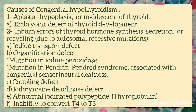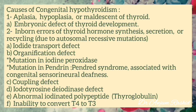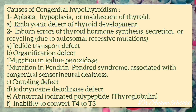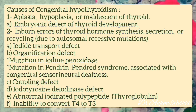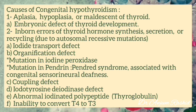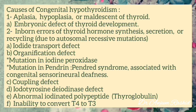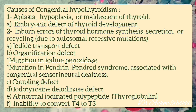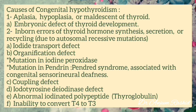The causes of congenital hypothyroidism include aplasia, hypoplasia, or maldescent of the thyroid, as in embryonic defect of thyroid development. The second cause is inborn errors of thyroid hormone synthesis, secretion, or recycling due to autosomal recessive mutations.